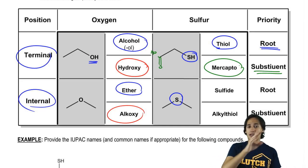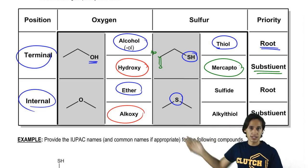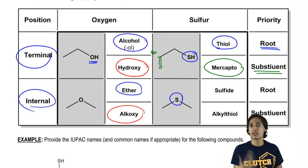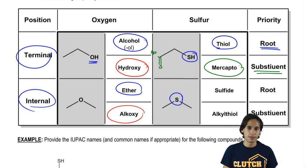But all you need to think is that mercapto is similar to hydroxy. If there's a situation where I used hydroxy as a substituent, I would also use mercapto as the name of the substituent. You're only going to use mercapto if there's a higher priority group present on the chain.